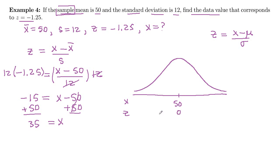We were given z is negative 1.25, and we wanted to know what is the x-value that goes with that z-score. And we found 35. So that's a picture of what we found. We found this correspondence between z-score and data value.